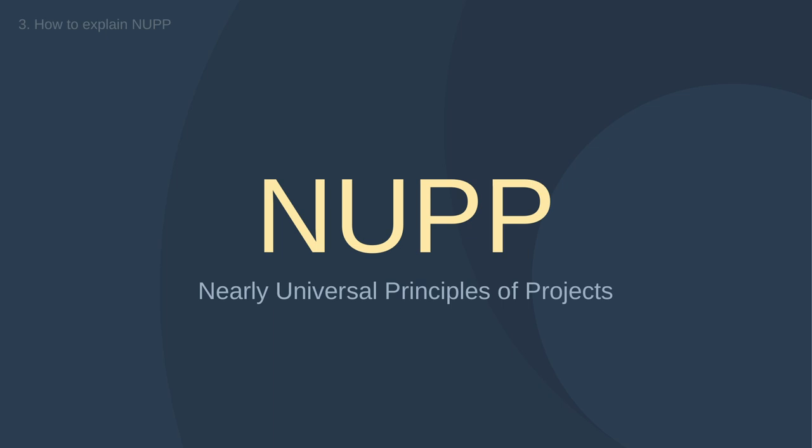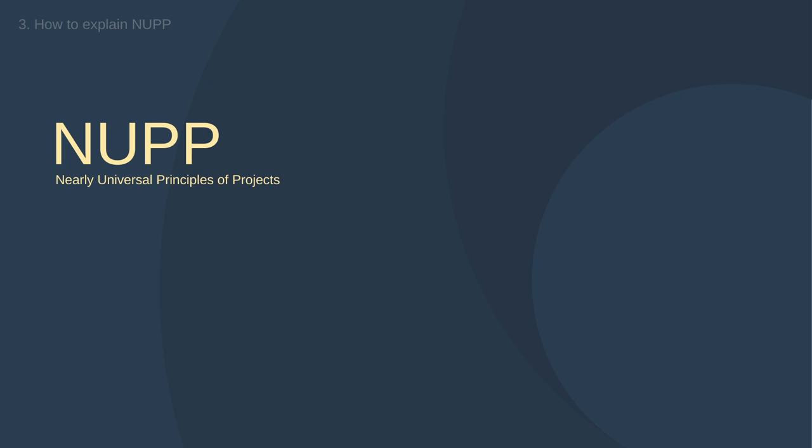NOOP is available at noop.guide. It's a set of six principles, each called a NOOP — with one 'P' for the individual principle, and two 'P's for the whole package: Nearly Universal Principles of Projects. On the website you can read all the explanations, and each principle comes with a few examples.